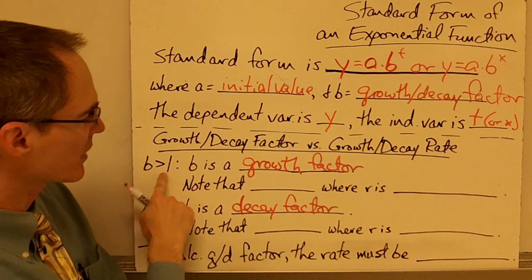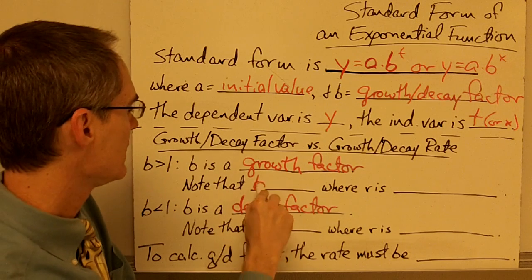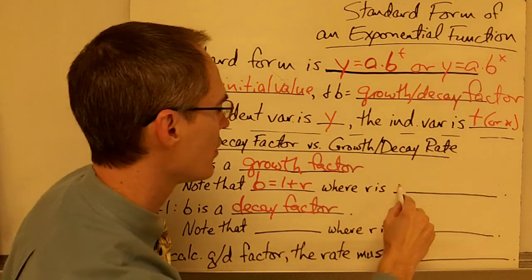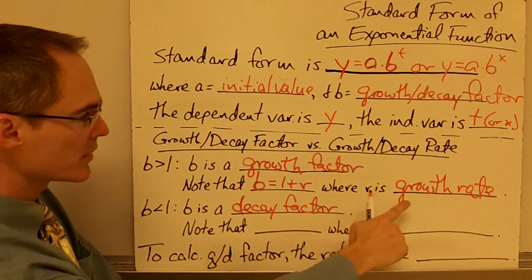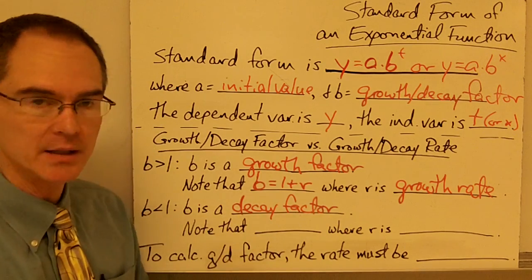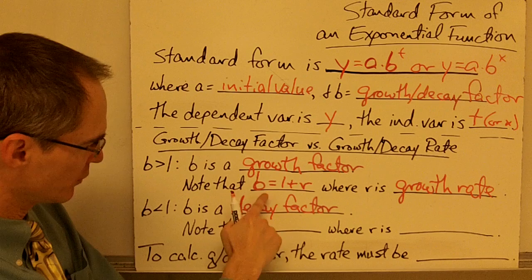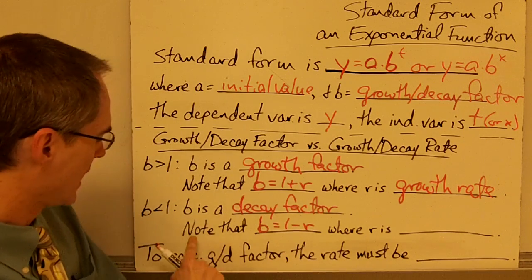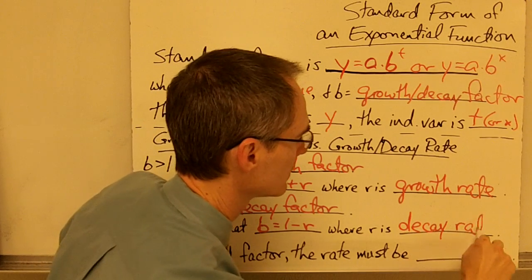If you have a b value greater than 1 — that is, a growth factor — then there is this equation: b equals 1 plus r, where r is called the growth rate. Notice the growth rate is related to the growth factor by this equation, but the two things are not the same. If b is less than 1 — a decay factor — the relationship is b equals 1 minus r, where r is called the decay rate.